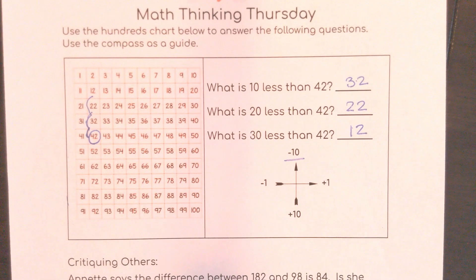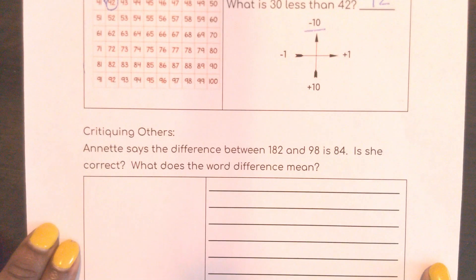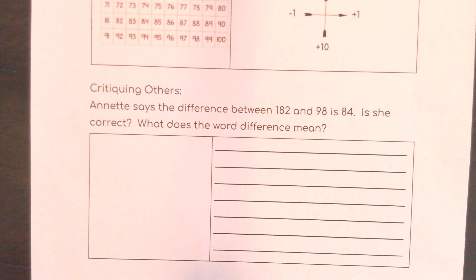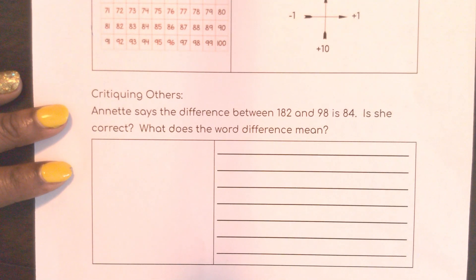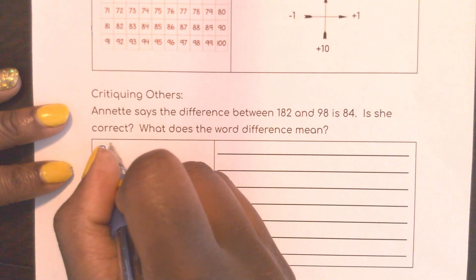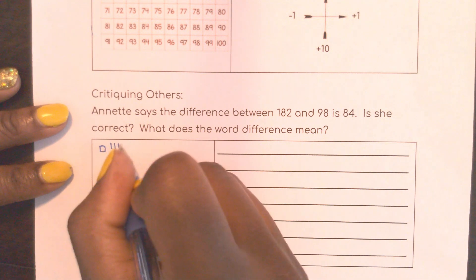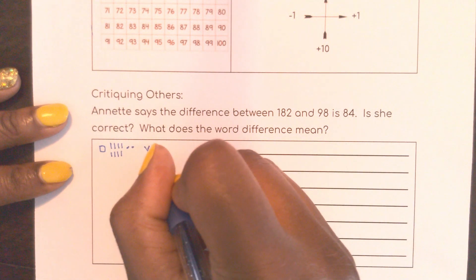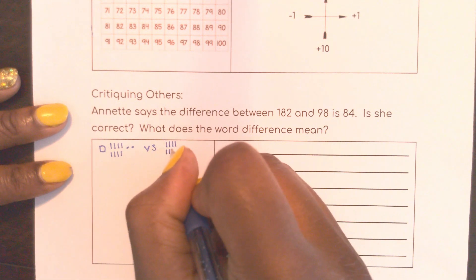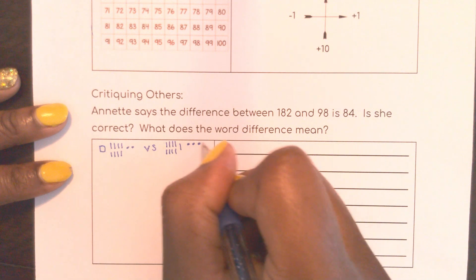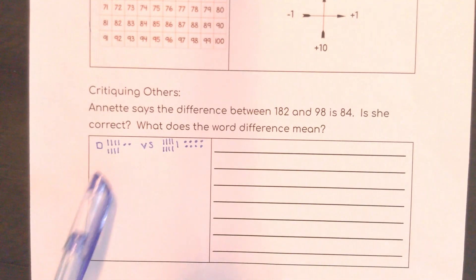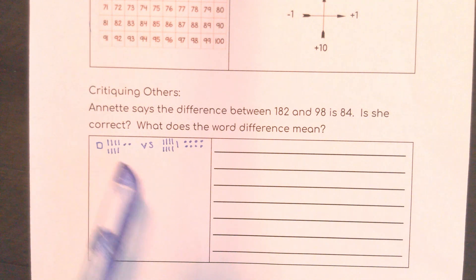Down here we are critiquing Annette. She says the difference between 182 and 98 is 84. Is she correct? What does the word 'difference' mean? The two numbers we are looking at are 182 and 98.